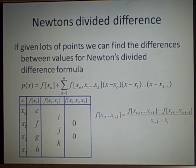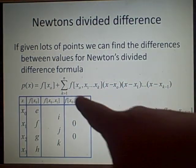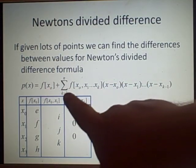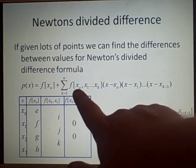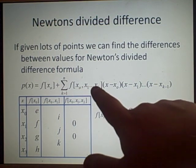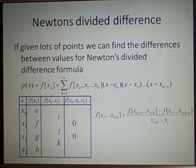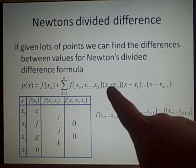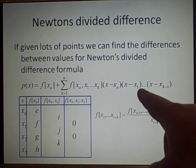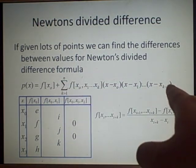The next method is Newton's divided difference — I find this one quite difficult. You use this formula for your polynomial: f(x0) plus the sum from k=1 of the divided difference f[x0, x1, ..., xk], multiplied by brackets of (x minus x0)(x minus x1) all the way up to (x minus x_{k-1}). So the first bracket term is just x minus x0.